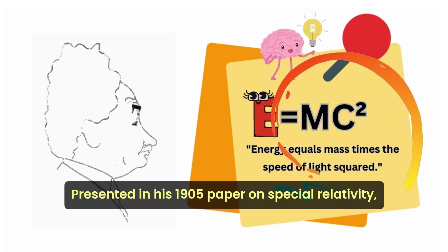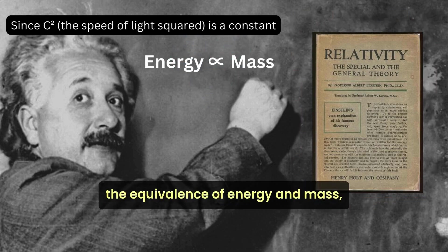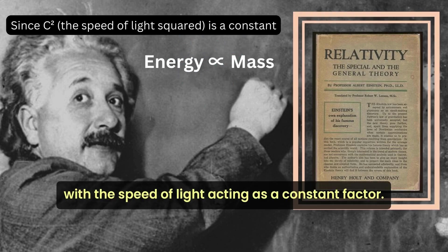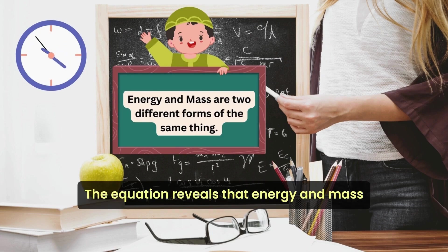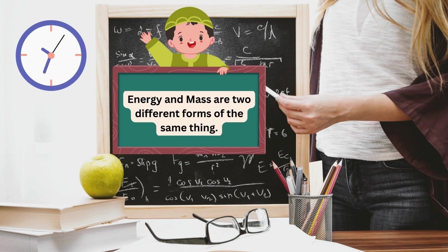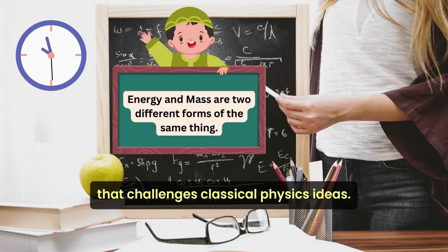Presented in his 1905 paper on special relativity, this seemingly simple formula illustrates the equivalence of energy and mass, with the speed of light acting as a constant factor. The equation reveals that energy and mass are interchangeable, presenting a revolutionary concept that challenges classical physics ideas.